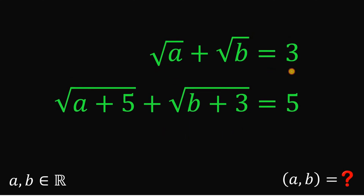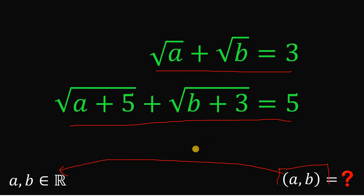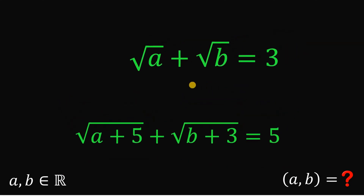Alright, so given these two system of equations, we have square root of A plus square root of B equals 3, and square root of A plus 5 plus square root of B plus 3 equals 5. Our goal is to solve for the values of A and B that satisfy this system of equations, wherein A and B are both real numbers. To answer this question, what we're going to do is to focus first on the first equation: square root of A plus square root of B equals 3.